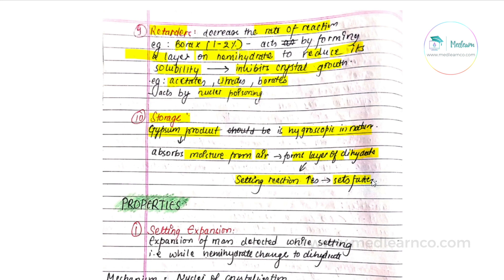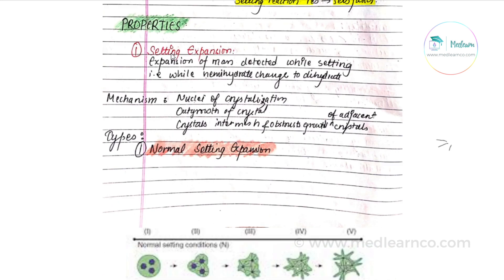First property is setting expansion — the expansion of the mass detected while setting. When the hemihydrate is changing to dihydrate, there is a certain expansion of mass. The basic mechanism involves: first, nuclei of crystallization; then crystal outgrowth; then growing crystals which intermesh.